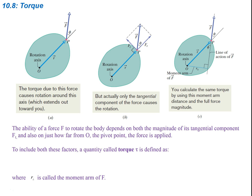We're only worried about the part of the force that is actually causing the rotation. This tangential force is really the only thing that is going to cause a rotation about this axis. The portion of the force that is directly in line with the axis would not cause any sort of rotation. So we're really only worried about the sine of the angle between the radius vector and our force vector — we don't care about the radial part. That's why they call it Ft, the tangential part of the force being applied.